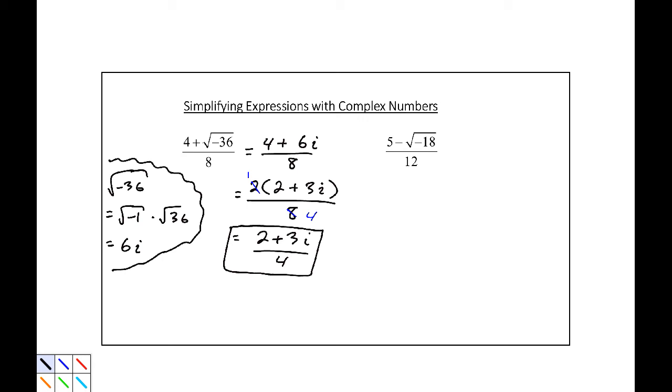For our last example, the square root of negative 18. Simplify that off to the side. The largest perfect square that goes into 18 is going to be 9. So the square root of negative 1, square root of 9, square root of 2. This should simplify to be 3i root 2.